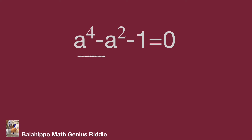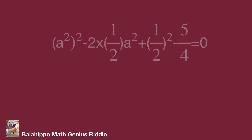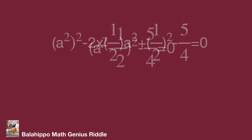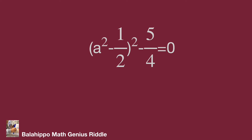Let's try to complete the square in this equation from a to the power of 4 minus a squared. Adjust the equation as the quantity a squared minus 2 times one-half times a squared plus one-half squared minus 5 over 4, equal to 0. The first three items form a perfect square, giving the quantity a squared minus one-half squared minus 5 over 4, equal to 0.